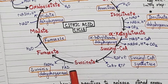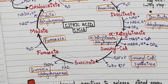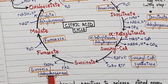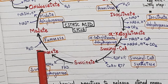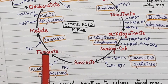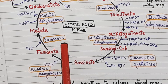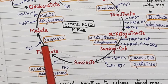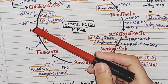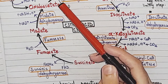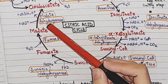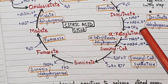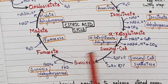Succinate is converted into fumarate by the enzyme succinate dehydrogenase, and in this reaction FADH₂ is produced. Then fumarate is converted into malate by the enzyme fumarase, with water being added. Finally, malate is converted back into oxaloacetate by malate dehydrogenase, producing NADH.